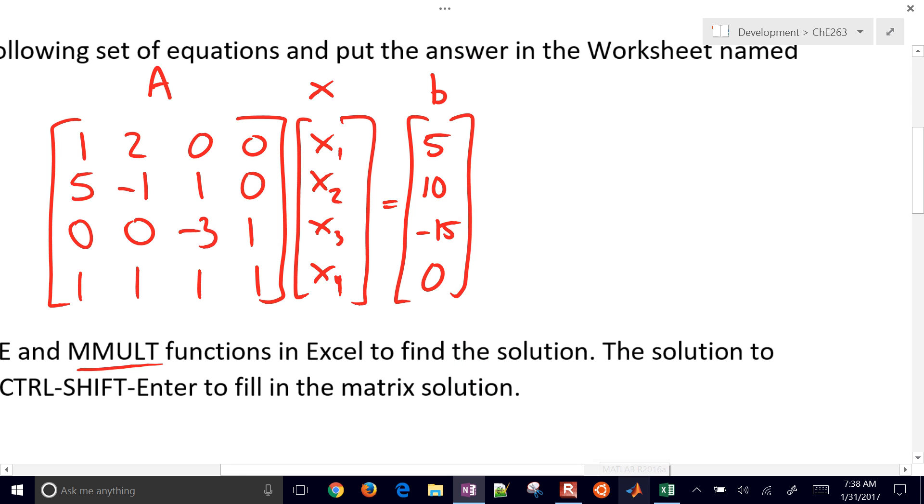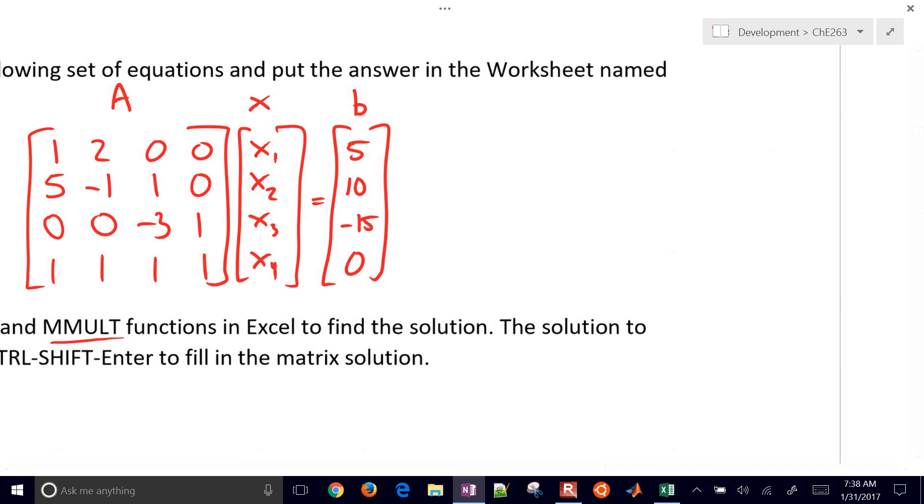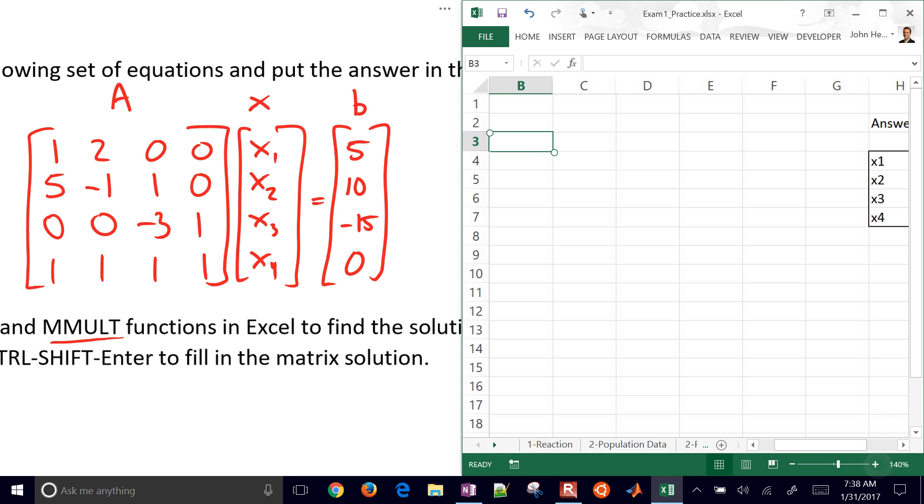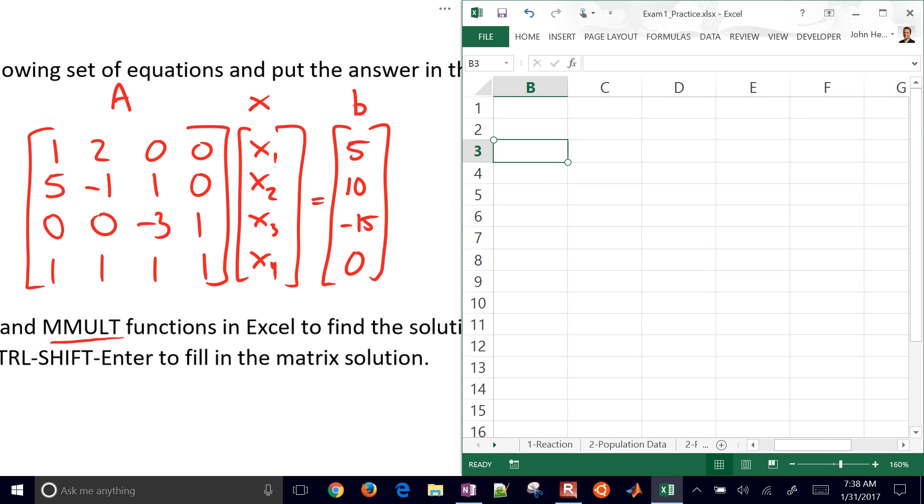So we're going to solve this set of linear equations with Excel. I'll make that just a little bit smaller. Okay, and make this one just a little bit bigger. All right, so here's our A matrix right here. And I'm just going to put in one, two, zero, zero. And then five, oops, five, negative one, one, zero. Okay. And zero, zero, negative three, one. And then a bunch of ones right there.